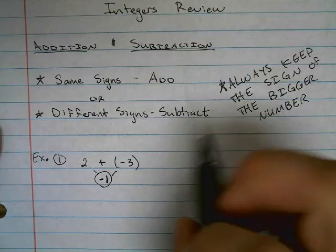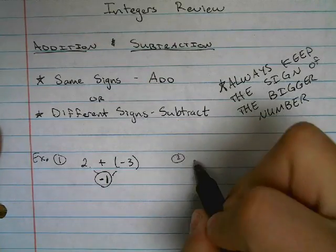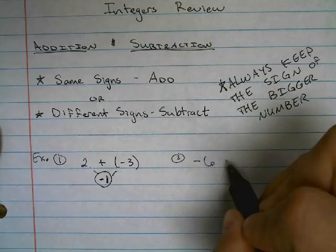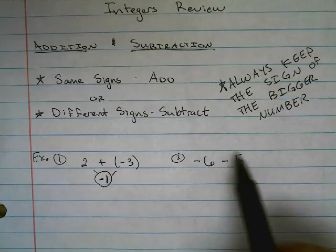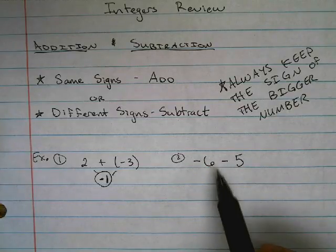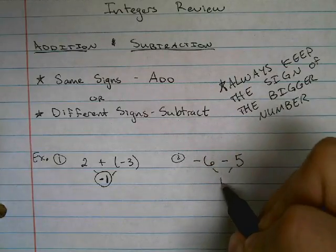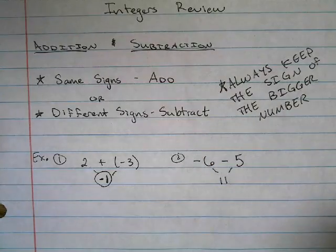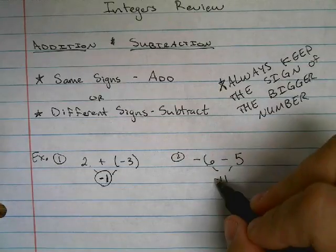Say I have negative 6 minus 5. We have a negative 6, and that minus 5 we can think of as a negative. So these are actually the same signs. Negative 6 minus 5 — same signs add. And then keep the sign of the larger number, so that will be negative as well.